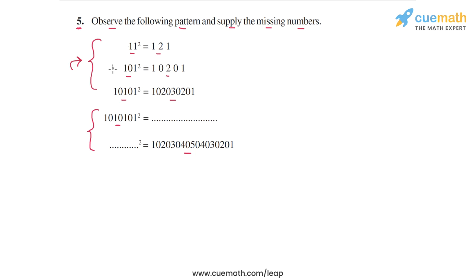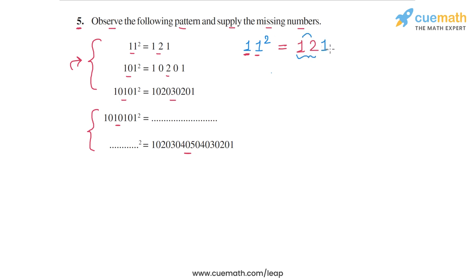Let me show you one interesting way to analyze the pattern. For 11² = 121: the first digit is 1, so we write 1; the second digit is also 1, so we write 2. Because there are no more digits in 11, we complete the string symmetrically — we have 12, then write 1 again — giving us 121.